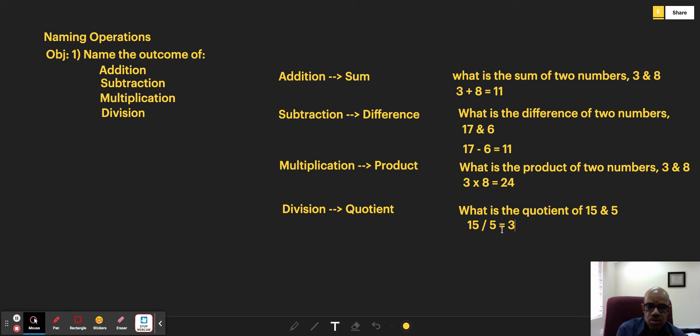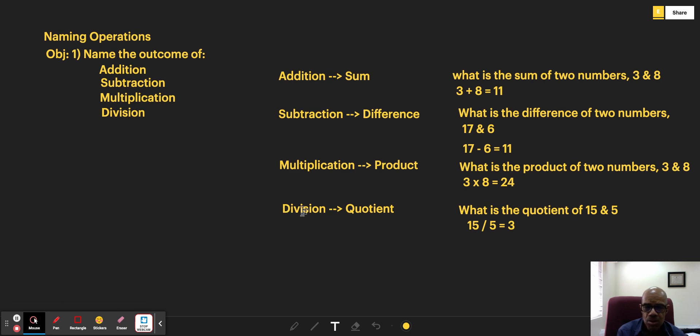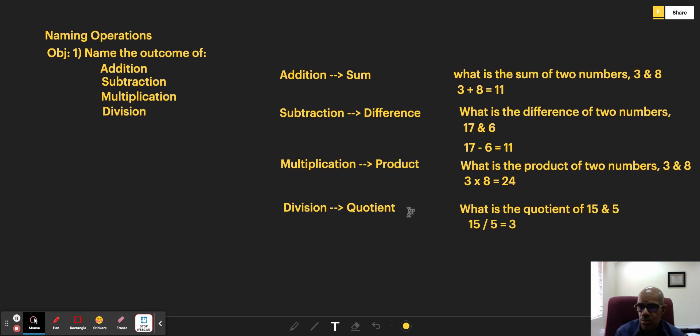So those are the four outcomes of operations. The outcome of addition is a sum, the outcome of subtraction is a difference, the outcome of multiplication is a product, and the outcome of division is a quotient. I hope this helped.